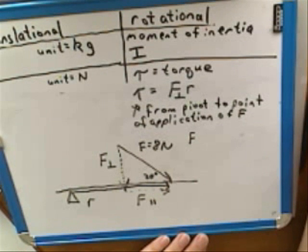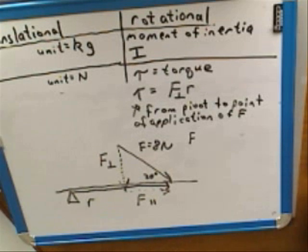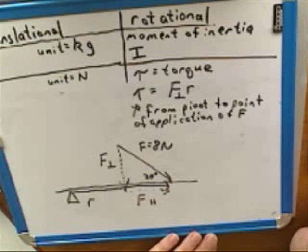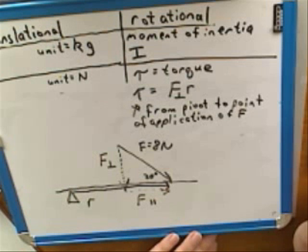Try working that out on a piece of paper and keep talking me through each step. So F perpendicular is equal to opposite over hypotenuse. I've got to write SOHCAHTOA down real quick. So we're trying to find the vector of F perpendicular. Opposite over hypotenuse is sine, so F perpendicular would be... it would be sine 20 degrees — wait, it'd be 8 sine 20 degrees.